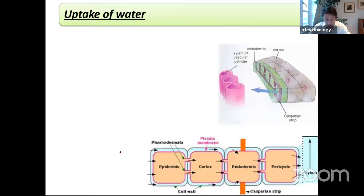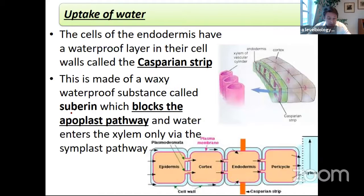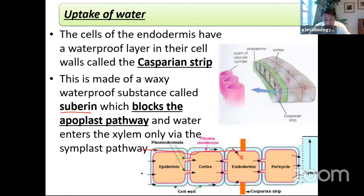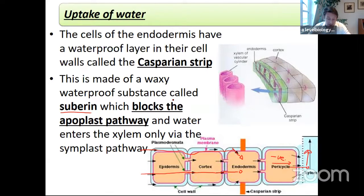The Casparian strip is a waterproofing substance called suberin. Its purpose is to block the apoplast pathway and force water into the xylem. The apoplast pathway hits the Casparian strip and is forced into the endodermal cell, while the symplast pathway travels through plasmodesmata into the pericycle. Active transport of mineral ions into the pericycle cells maintains a more negative water potential there, causing water to move into the pericycle and then up the xylem in the cohesion-tension transpiration stream.